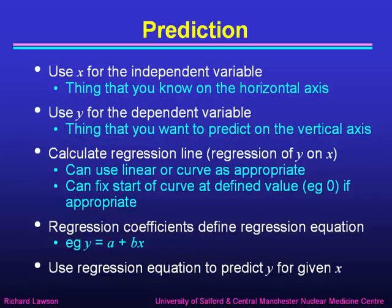We use x for the independent variable — the thing on the horizontal axis that we know precisely — and y for the dependent variable, the thing we want to predict from our measurements. We calculate the regression line by doing a regression of y on x, and that can be a linear regression or a curvilinear regression as appropriate for the data. Linear regression is more straightforward; curves are more complicated, but there are programs that will do them for you. You may also want to fix the start of the curve at a defined value, such as zero, if appropriate.